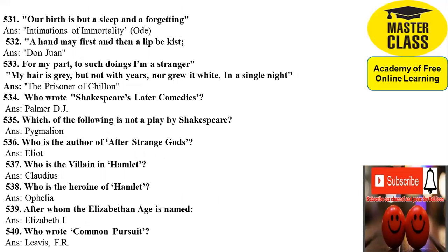531: 'Our birth is but a sleep and a forgetting' — taken from 'Intimations of Immortality.' 532: 'A hand may first and then a lip be kissed' — taken from Don Juan, written by Byron. 533: 'My hair is grey, but not with years, nor grew it white in a single night' — taken from 'The Prisoner of Chillon.'